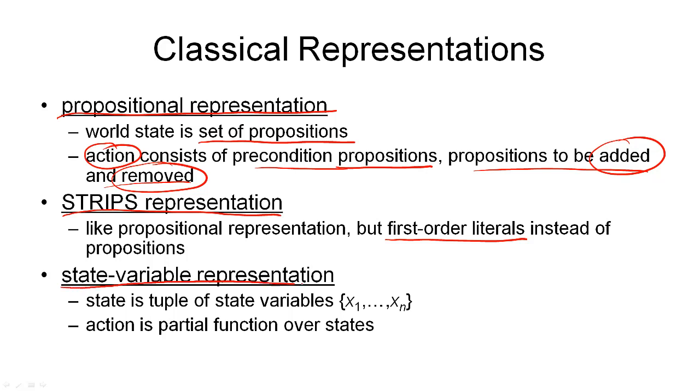The final variant is the state variable representation, where a state consists of a set of state variables. A state variable is simply a variable that must have a value. It's usually described by a function. For example, we could have a function that describes the location of the robot, Rloc, that takes a robot as an argument and tells us where that robot is at location L. The advantage of this representation is that it represents the functional property of this. The robot can only be at one location at any one time. So, in the STRIPS representation, at least in theory, you can have several assertions of where the robot might be. In the state variable representation, the functional property, namely that the robot can only be at one location at a time, is exploited. Actions in this representation are simply described by sets of preconditions values that look like expressions like this and assignments of new values to these state variables like this one.